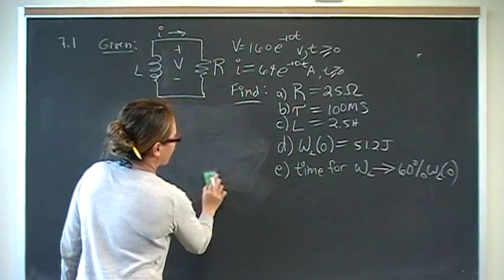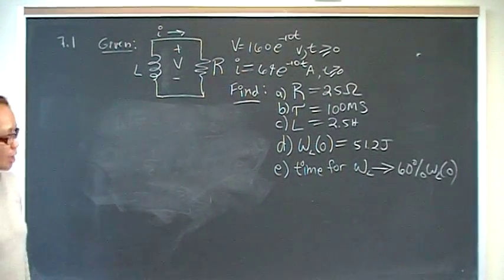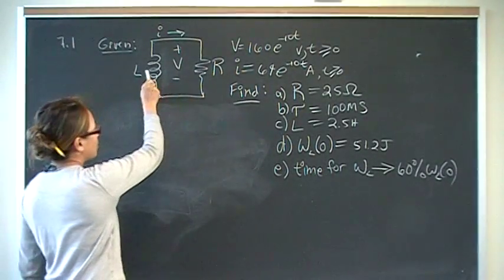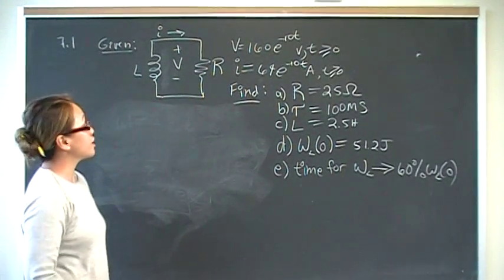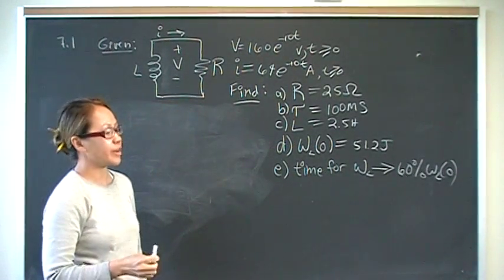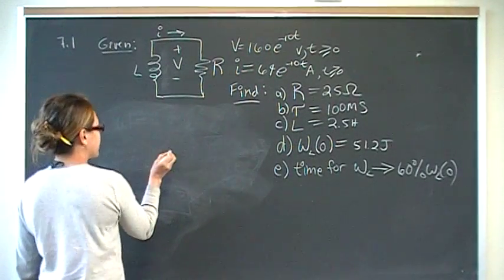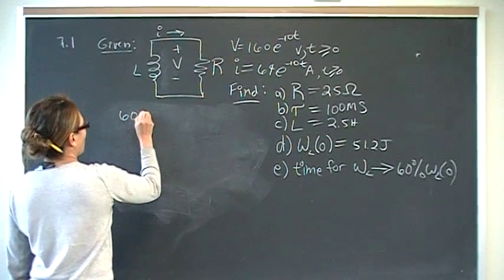Now, we need to find the time that it takes for the energy, the 51.2 joules stored in the inductor at time 0, how much time, what's the time when it will dissipate 60% of this energy?